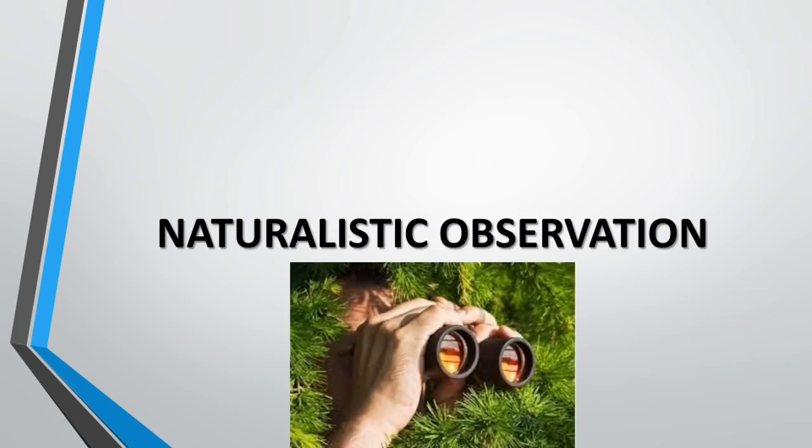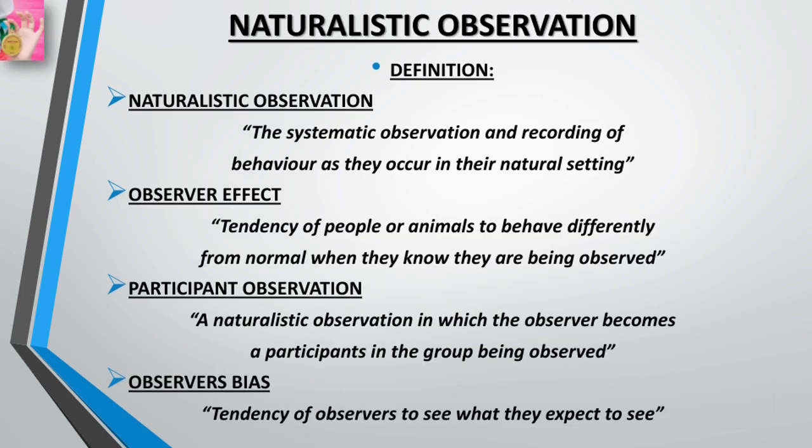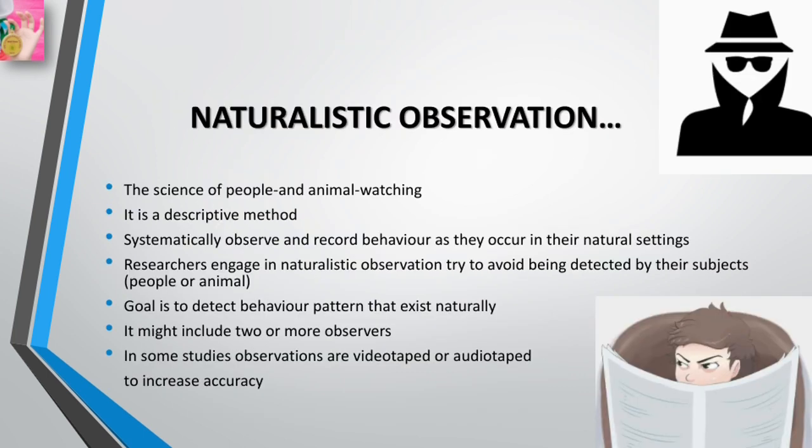Before discussing naturalistic observation in depth, here are some key definitions. Naturalistic observation is the systematic observation and recording of behavior as it occurs in a natural setting. The observer effect is the tendency of people or animals to behave differently from normal when they know they are being observed. Participant observation is a naturalistic observation where the observer becomes a participant in the group being observed. Observer bias is the tendency of observers to see what they expect to see.